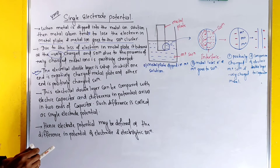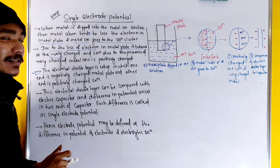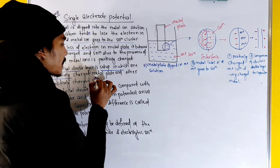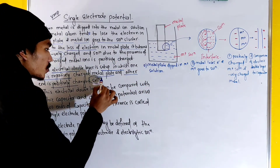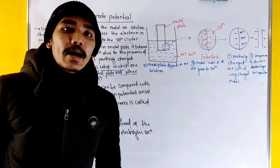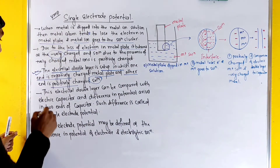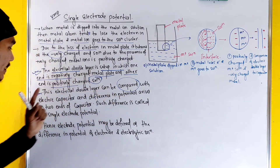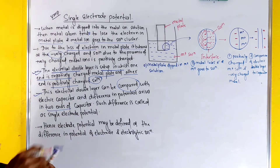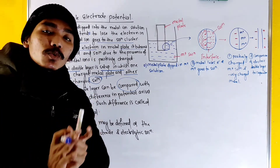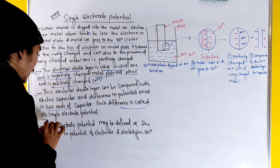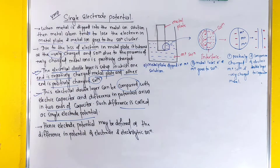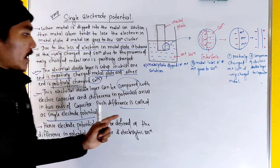The electric double layer is set up in which one end is negatively charged — the metal plate — and the other end is positively charged. This electrical double layer can be compared to an electrical capacitor, and the difference in potential arises between the two ends of the capacitor.